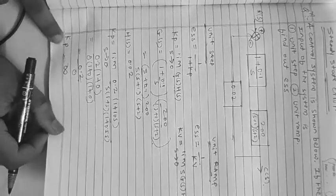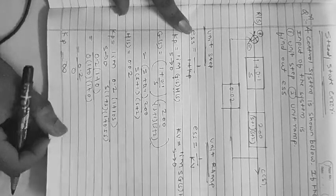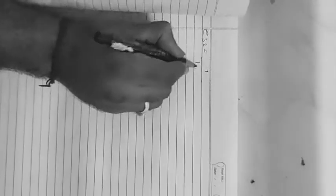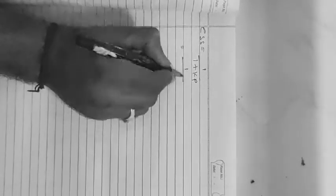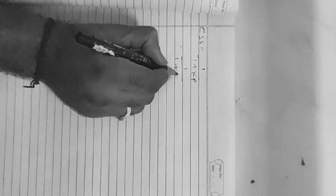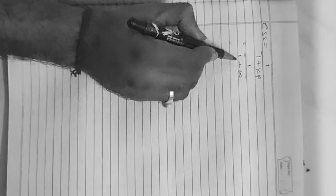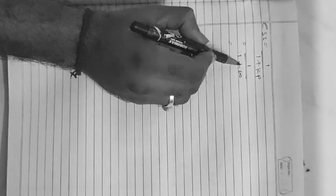Now we substitute Kp into the steady state error formula. ESS = 1 / (1 + Kp) = 1 / (1 + ∞) = 0. Therefore, the steady state error for the unit step signal is 0.